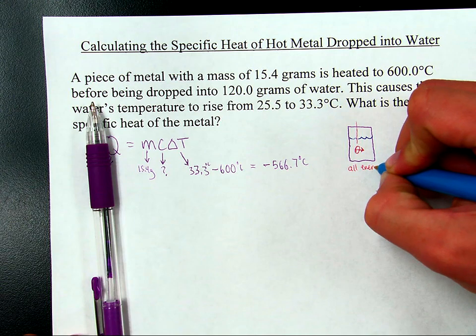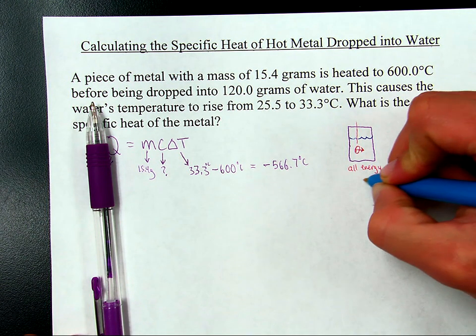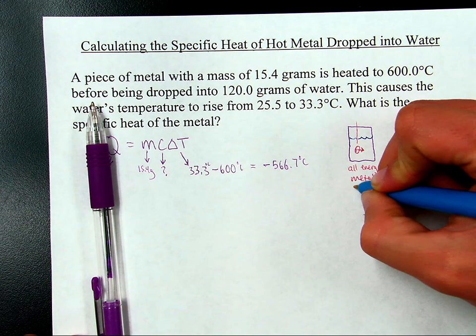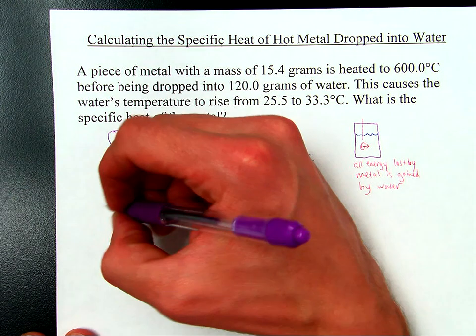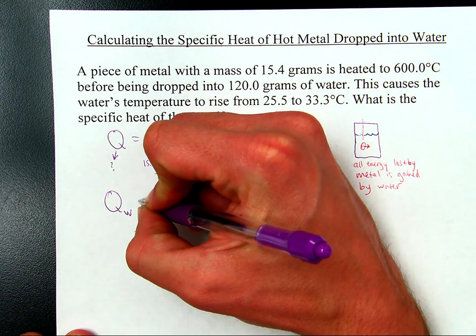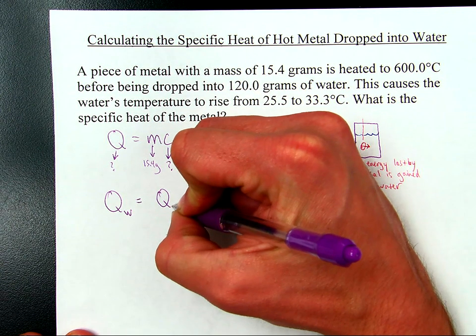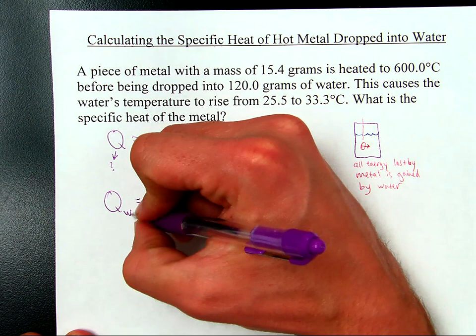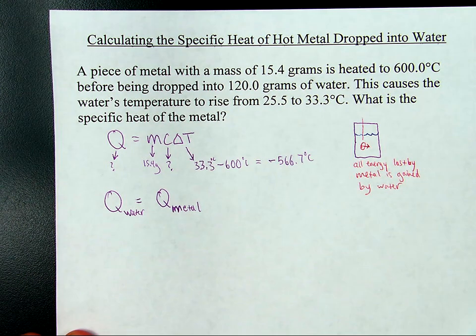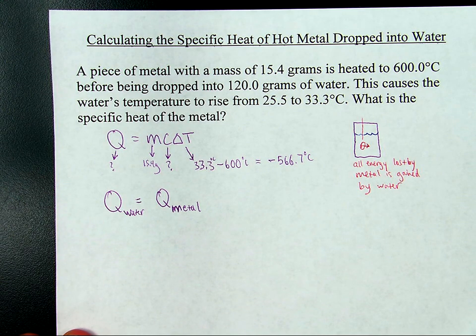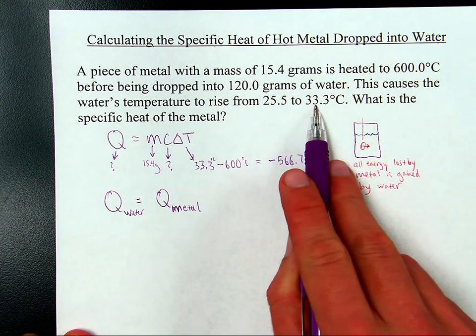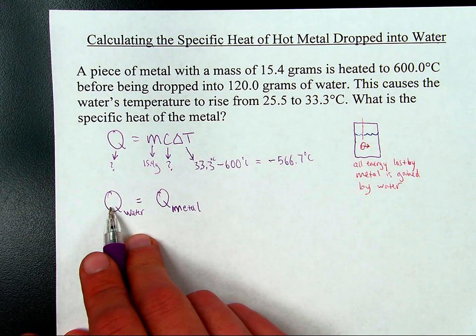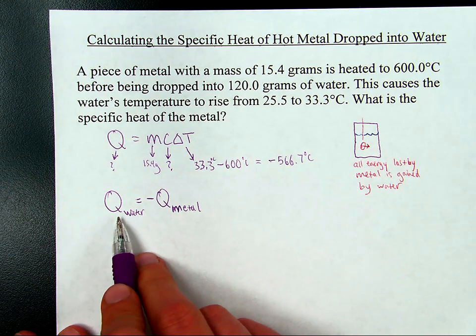We're going to say that all of the heat lost by that metal is gained by the water. Or all energy lost by metal is gained by water. This is going to allow us to get around this problem. So what this comes down to is basically saying that Q for water is equal to Q for metal. But if the metal is cooling down, it's because it's losing energy. Well, the water is warming up because it's gaining energy. So whenever something gains energy, it's positive. Whenever something loses energy, it has to have a negative sign. So Q of water equals negative Q of metal.